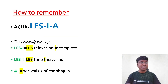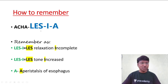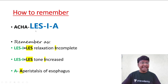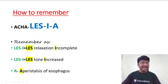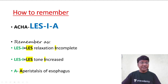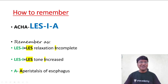The mnemonic is A-L-E-S-I. 'LES I' — lower esophageal sphincter relaxation is incomplete. Then again 'LES I' — lower esophageal sphincter tone is increased. And the last letter 'A' stands for aperistalsis of the esophagus.